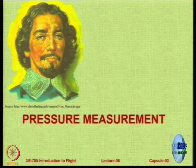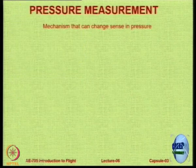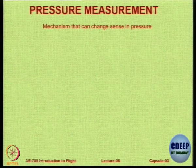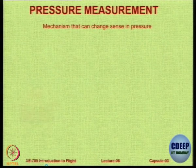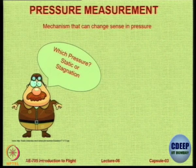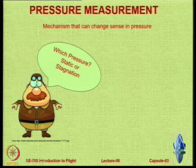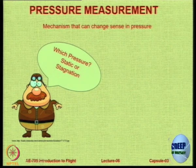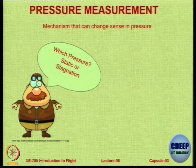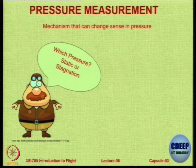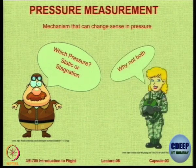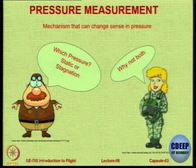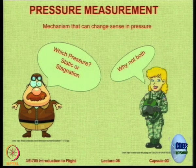Let us start with pressure measurement. Essentially what we need is a mechanism or system on the aircraft that can sense changes in pressure. But the question that immediately faces us is: which pressure are we measuring? Is it the stagnation pressure — the pressure when the fluid is brought to rest isentropically — or is it the static pressure or dynamic pressure? The answer is: let us measure both of them, because both are of use to us, as we will see very soon.